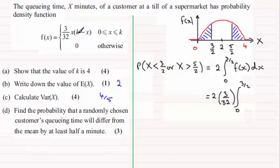Remember k was 4 that we discovered from the first part, so I could expand that bracket and I'm going to get 4x minus x squared and that's integrated all with respect to x.